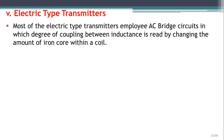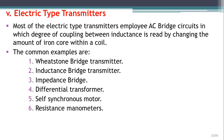Next is electric type transmitters. Most electric type transmitters employ AC bridge circuits in which the degree of coupling between inductances is read by changing the amount of iron core within a coil. Common types using AC bridge circuits include: Wheatstone bridge transmitters, inductance bridge transmitters, impedance bridge transmitters, differential transformers, self-synchronous motors, and resistance manometers. These bridge circuits have been studied in various courses, so we will not go into the details here.